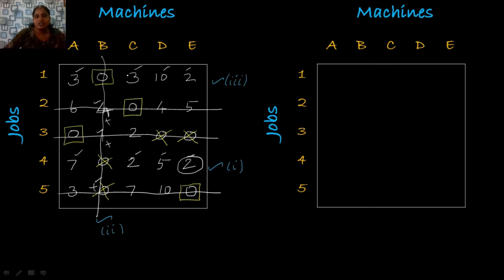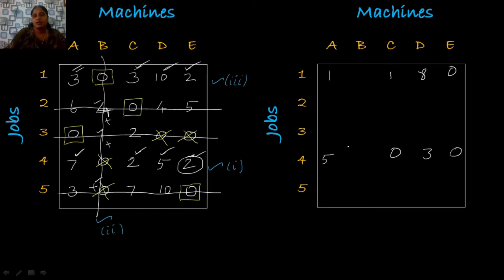Subtract 2 from all uncovered elements: 3-2=1, 3-2=1, 10-2=8, 2-2=0, 7-2=5, 2-2=0, 5-2=3, 2-2=0. Add 2 to the points of intersection: 4+2=6, 1+2=3, and 0+2=2. Write the remaining elements as they are.